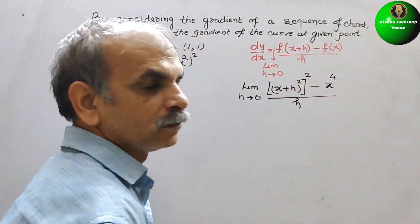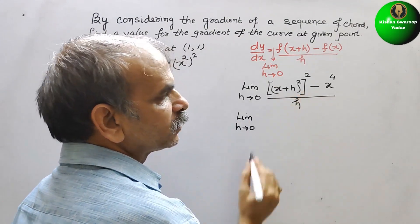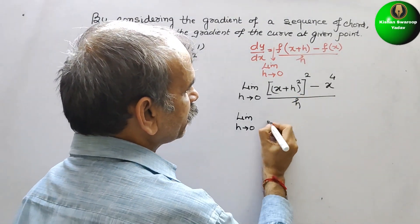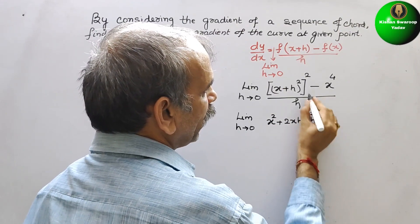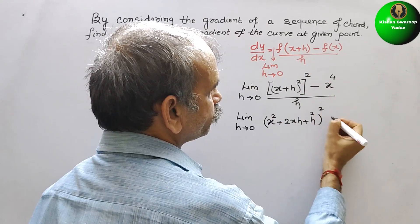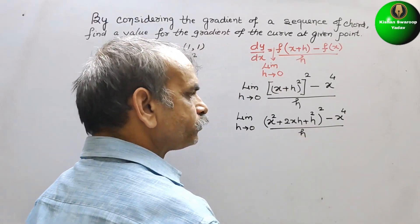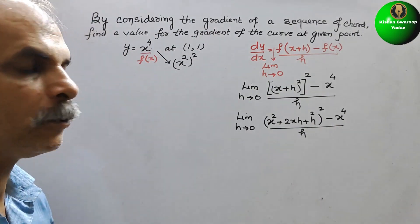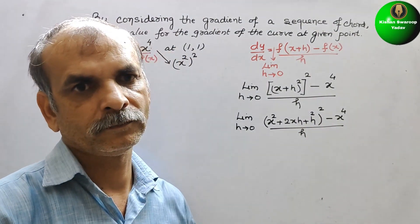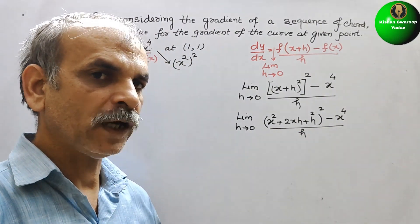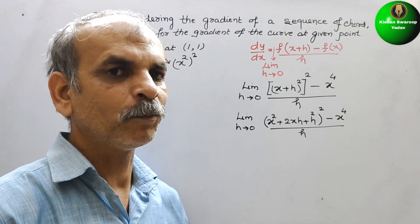So we have to solve this. Now, expanding (a+b)² gives x² + 2xh + h². The whole square is also there. Minus x to the power of 4, divided by h. Now this becomes (a+b+c) whole squared, which is a² + b² + c² + 2ab + 2bc + 2ca.